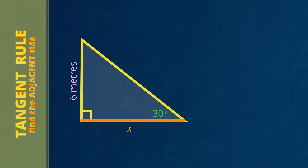Remember the trick: when X is on the top of the fraction, you times in the next line. T for top, T for times.